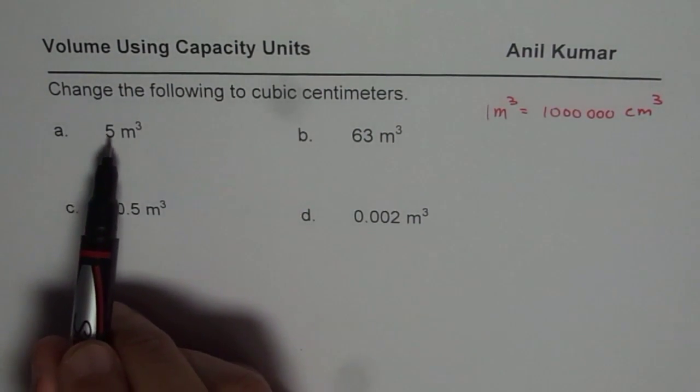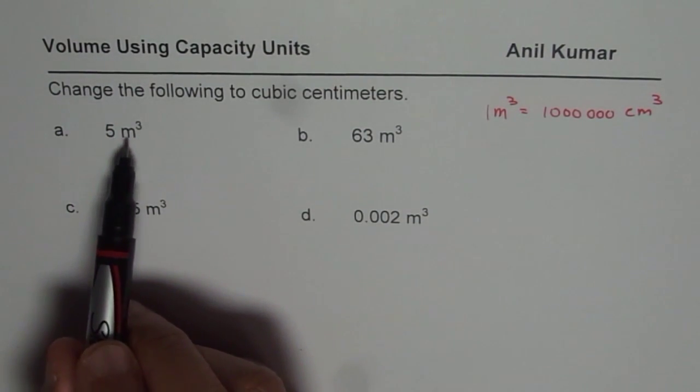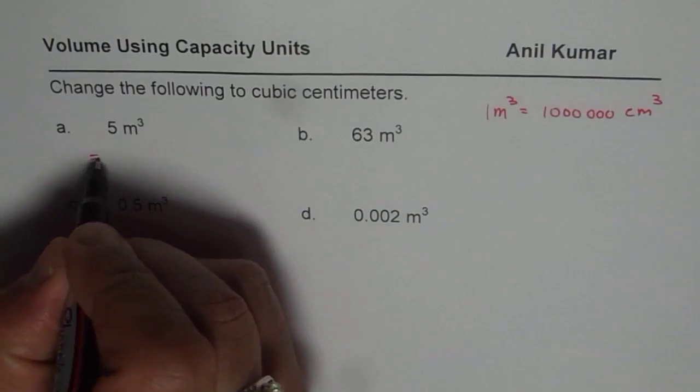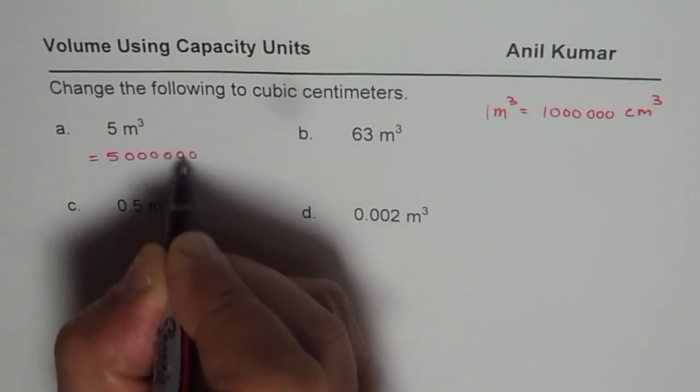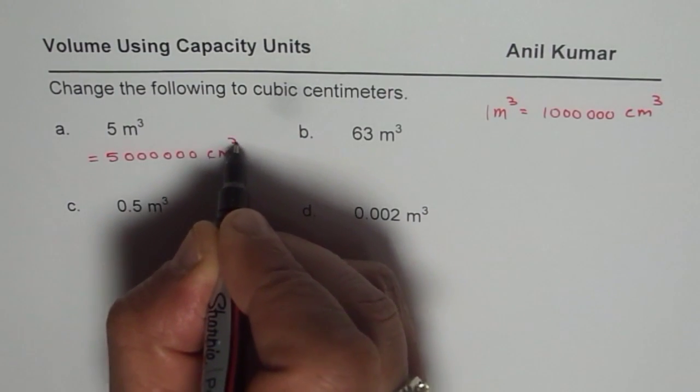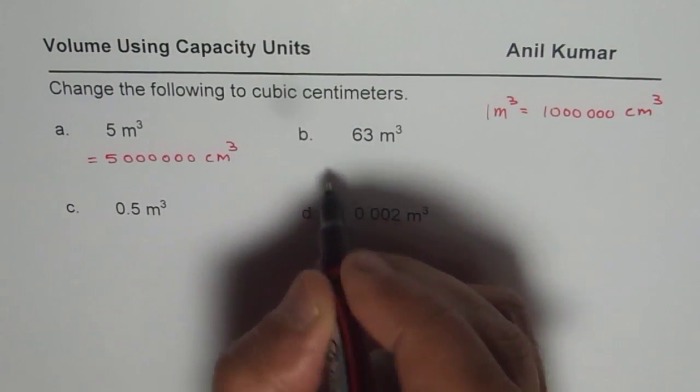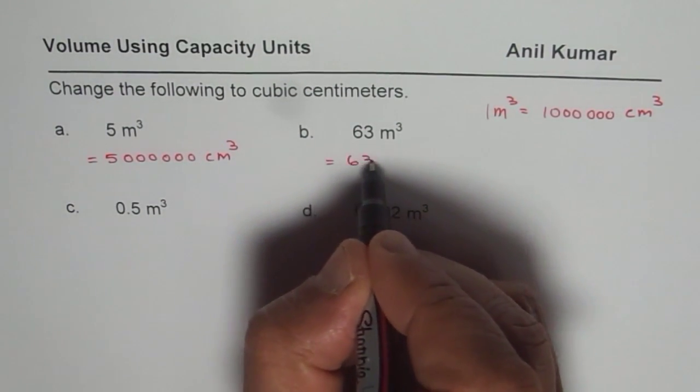5 meter cube equals 5,000,000 centimeter cube. 63 meter cube equals 63 million, that means 63,000,000 centimeter cube.